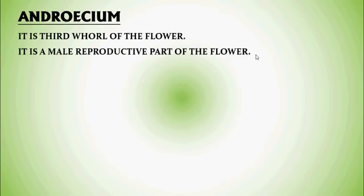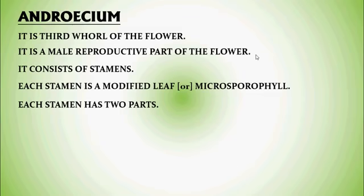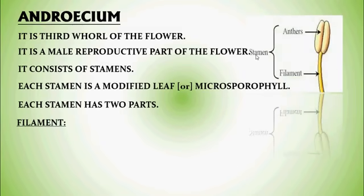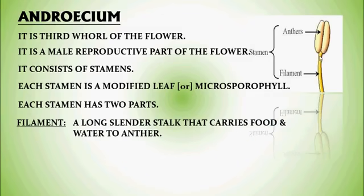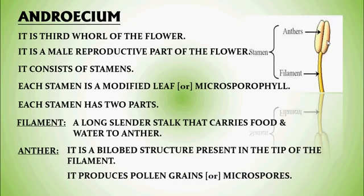Androecium — it is the third whorl of the flower and is the male reproductive part. It consists of stamens, and each stamen is a modified leaf or microsporophyll. Each stamen has two parts: the first is the Filament, which is a long slender stalk that carries food and water to the anther. The second part is the Anther, which is a bi-lobed structure present at the tip of the filament. The anther produces pollen grains or microspores.